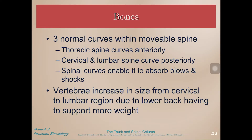The bones in your spine have three normal curves. In a movable spine, the way that your spine should curve — let me draw it here — we have the cervical region, the thoracic region, and the lumbar region, forming sort of an almost one-and-a-half S-curve. That helps us to absorb blows and shocks. The cervical and lumbar spine are curving posteriorly, while the thoracic region's curve is facing forward, anteriorly. These vertebrae also increase in size from top to bottom — they're small up top but get progressively larger as we go down.